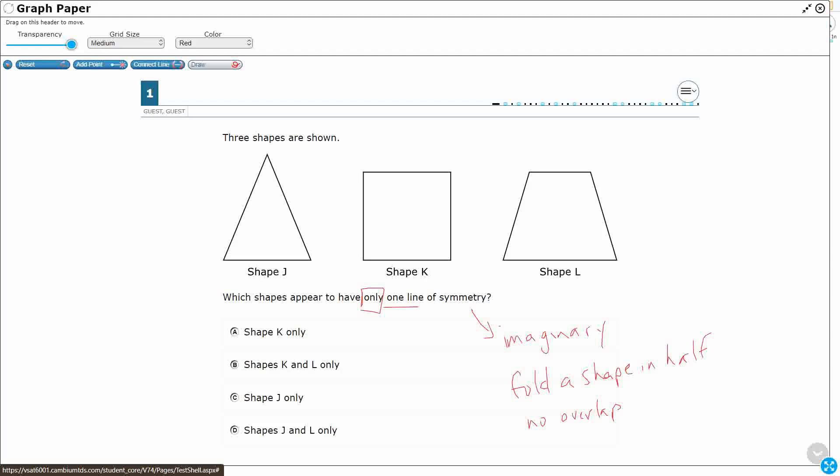So shape J is a triangle here, and hopefully we're seeing, I'm going to draw a dotted line, to pretend this is a straight line, right down the middle. I could cut that in half, fold this part over here, and it would line up perfectly with that part.